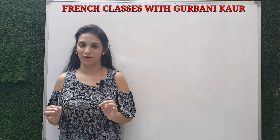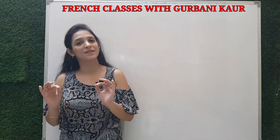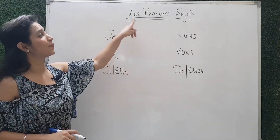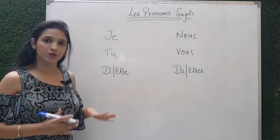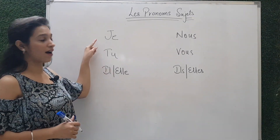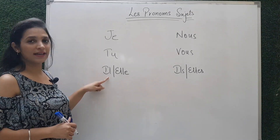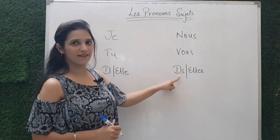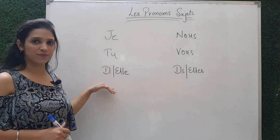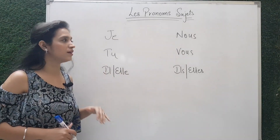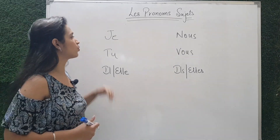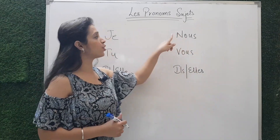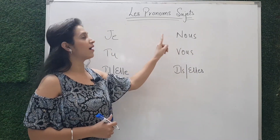Now we will learn what are subject pronouns in French — these are called les pronoms sujet. The pronoms sujet in French are: je, tu, il, elle, nous, vous, ils, elles. Step one is to learn them in order, which will help you in doing conjugations.